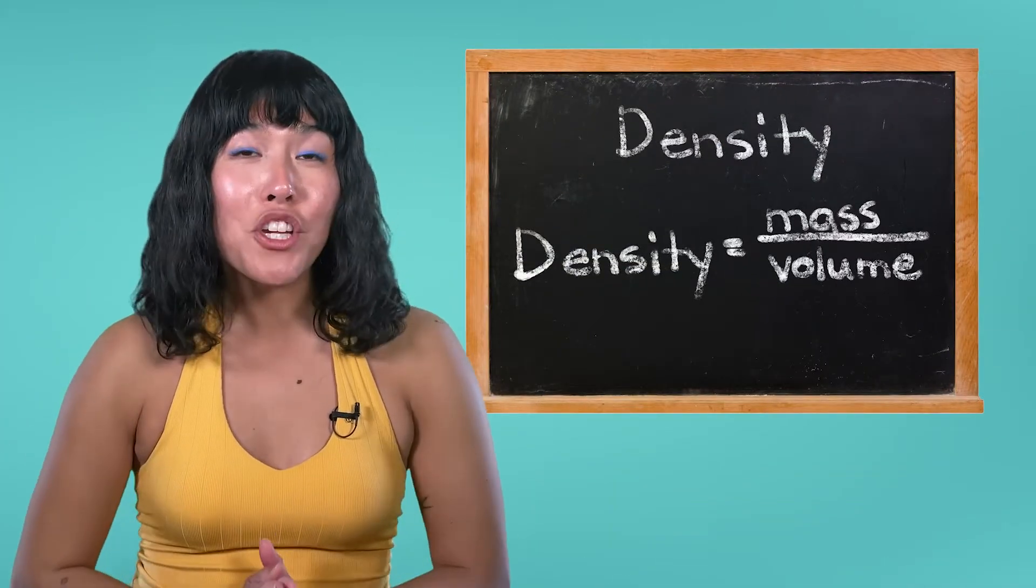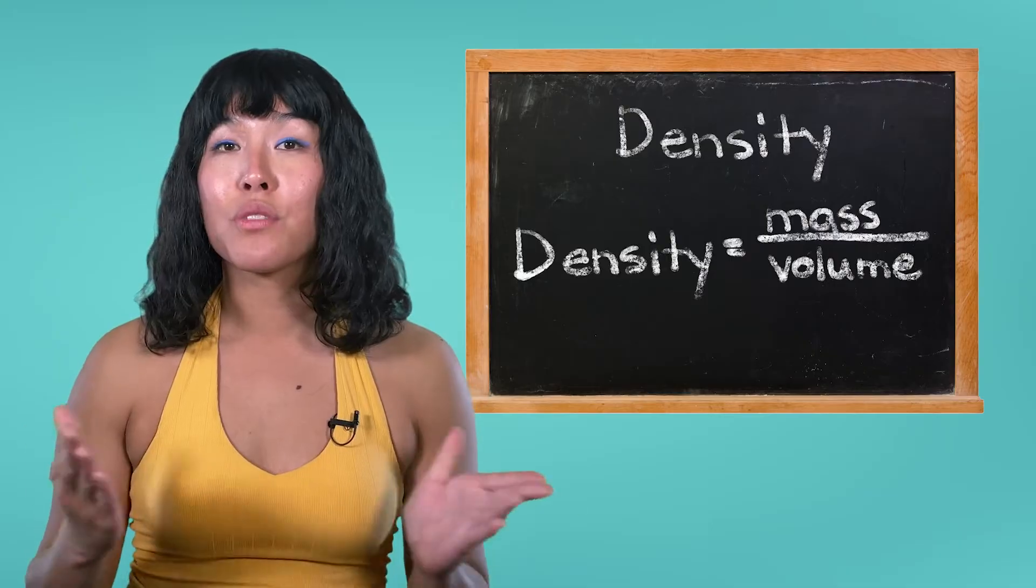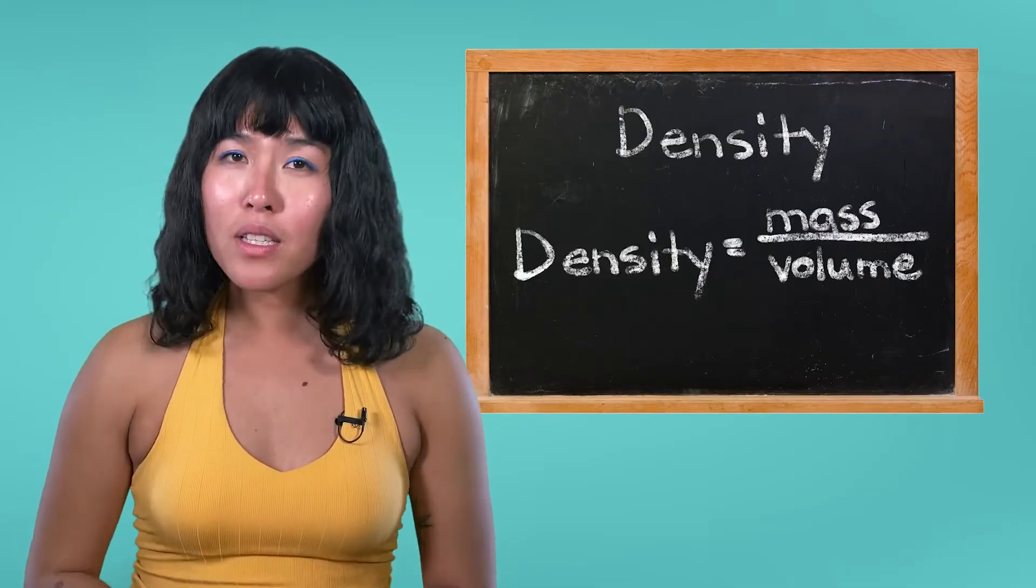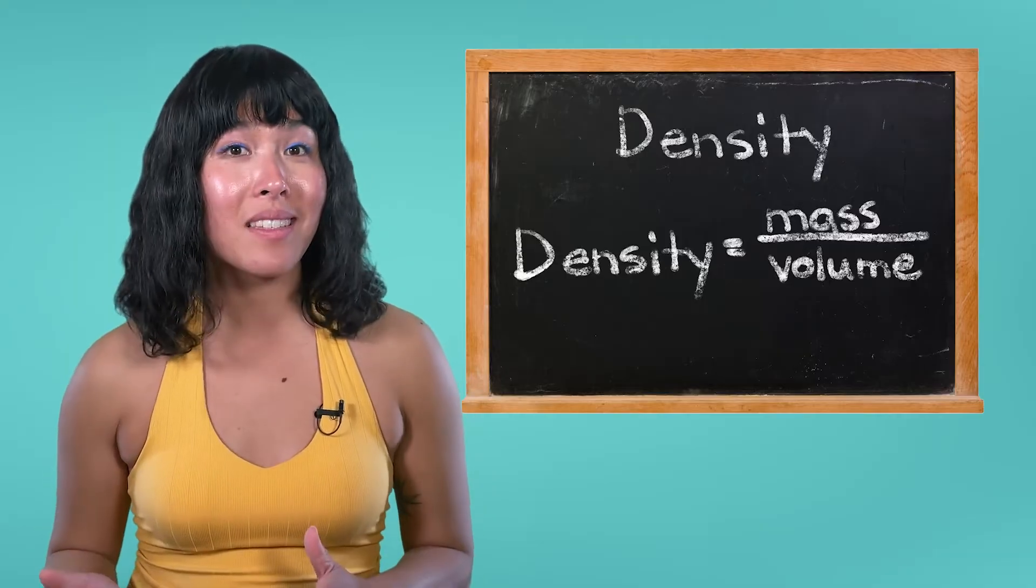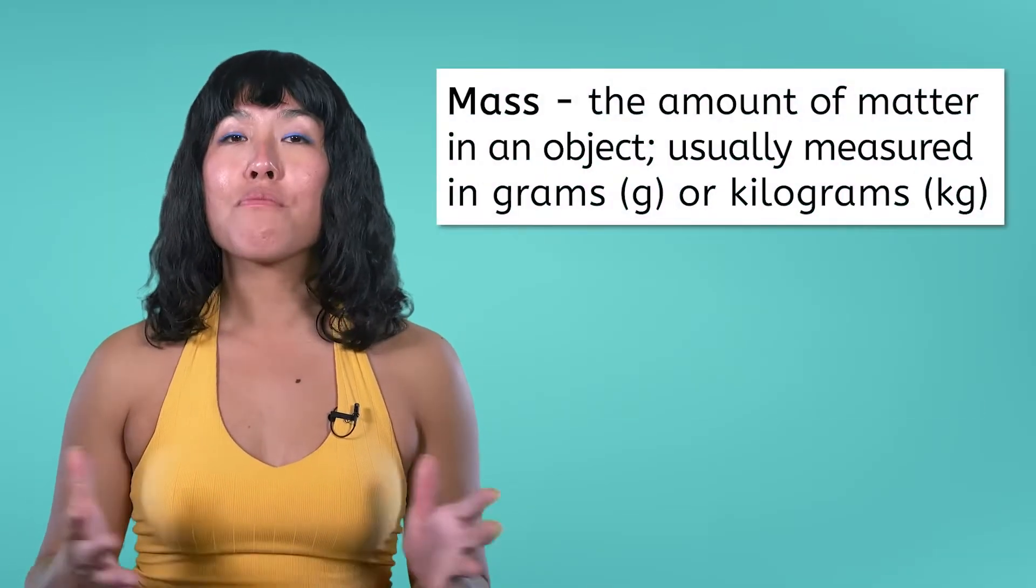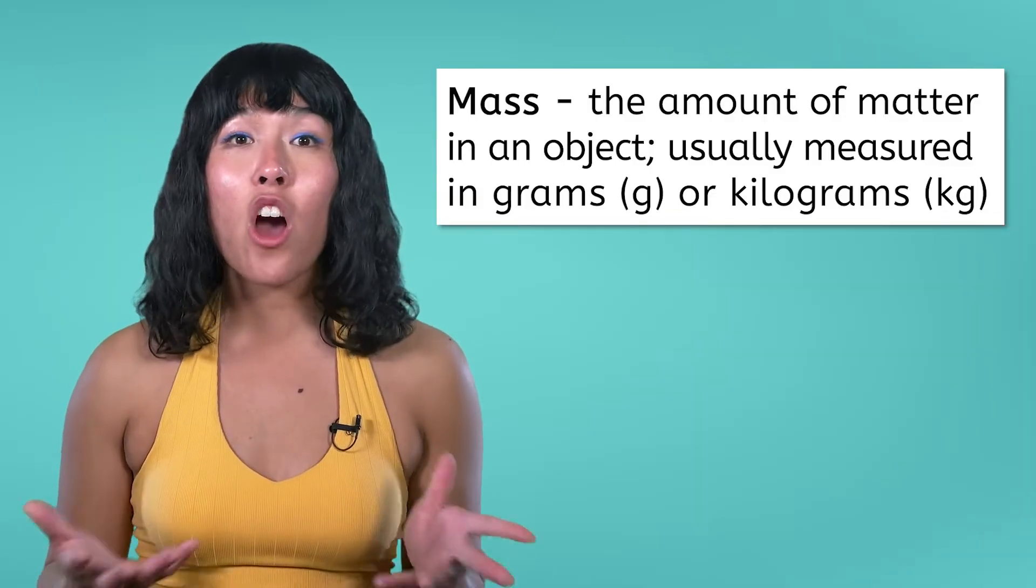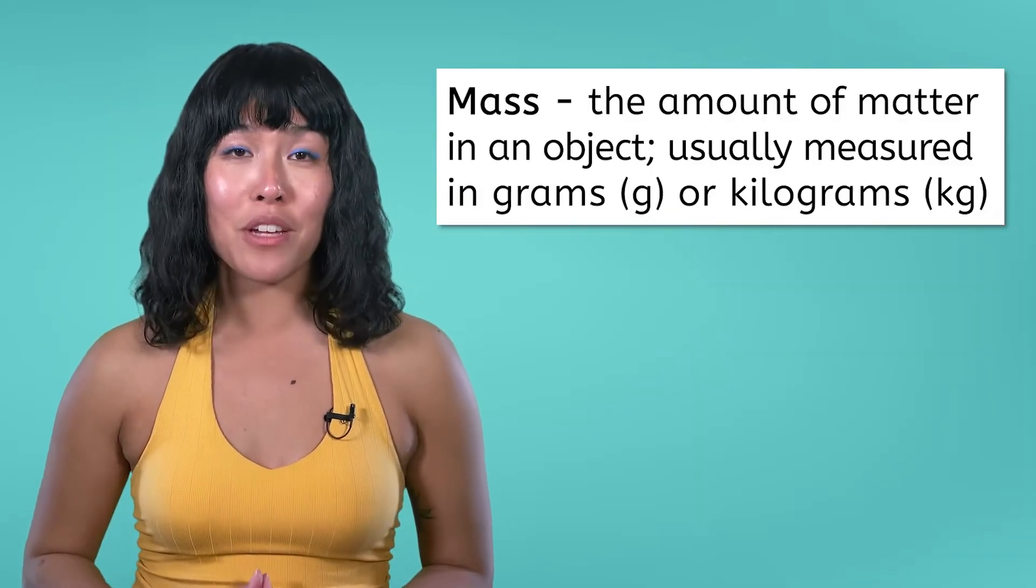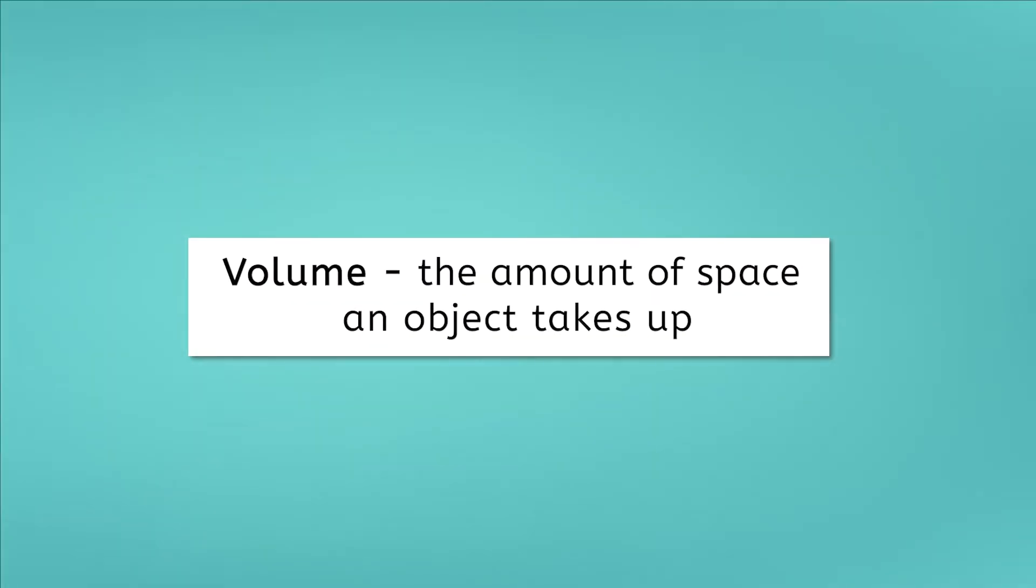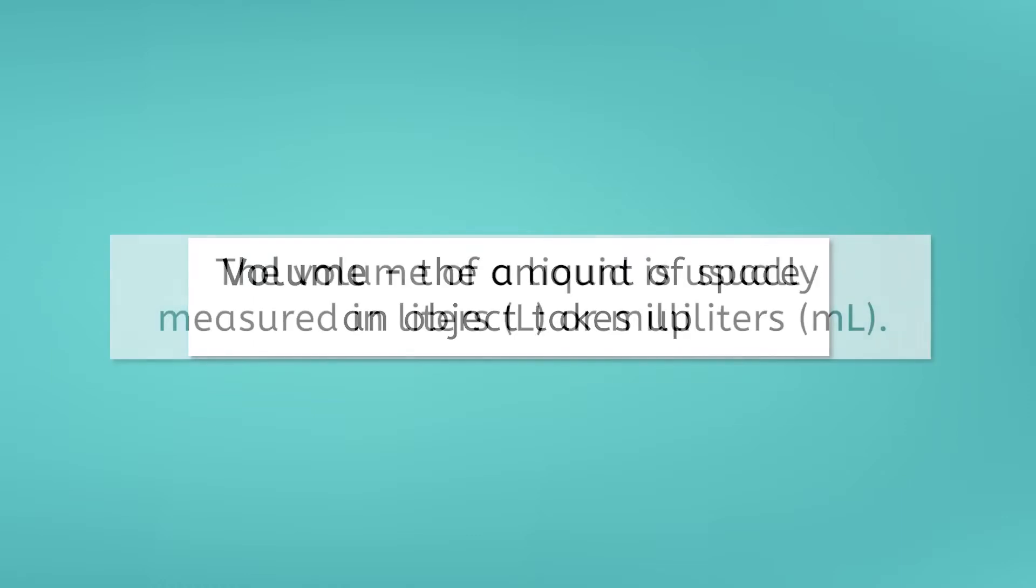Density is the ratio of an object's mass to its volume. But before we get into density, let's pause for a moment and define mass and volume. Mass is the amount of matter or stuff in an object and is usually measured in grams or kilograms. Volume is the amount of space an object takes up. For liquids, we measure the volume in milliliters or liters.